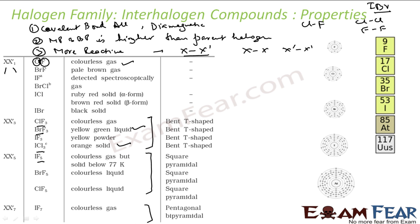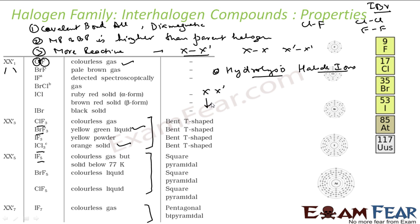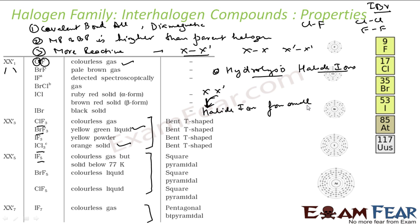Regarding hydrolysis, all these interhalogen compounds undergo hydrolysis. On hydrolysis, they give halide ions from the smaller halogen, X'. The smaller halogen X' gives a halide ion.